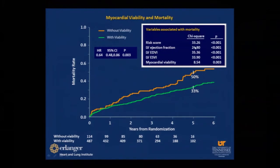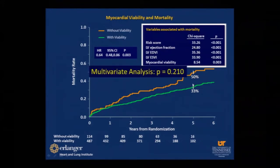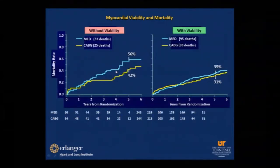When including multivariate analysis using risk scores, EF, end-systolic volume, and systolic volume, the difference between viable and non-viable myocardium in terms of mortality was not significant. This was a big disappointment — everybody expected it would solve the mystery once and for all and settle a specific indication for myocardial viability testing. The study authors then divided the group into patients with viable and non-viable myocardium who either went for surgery or medical therapy — and again, no difference.